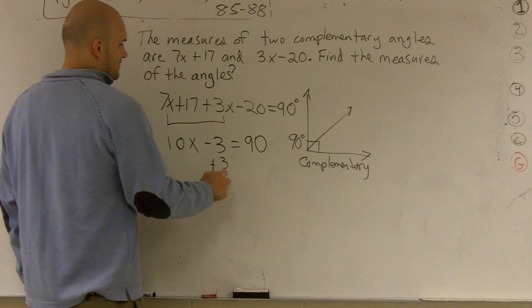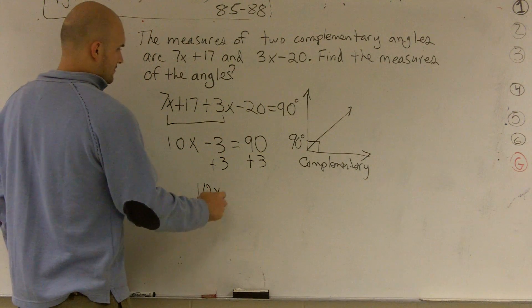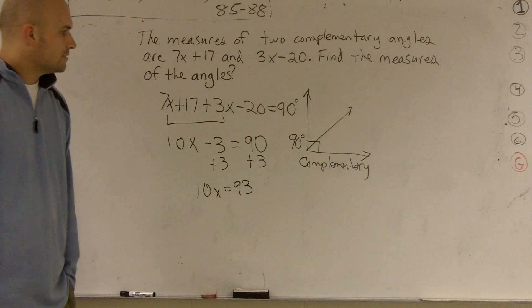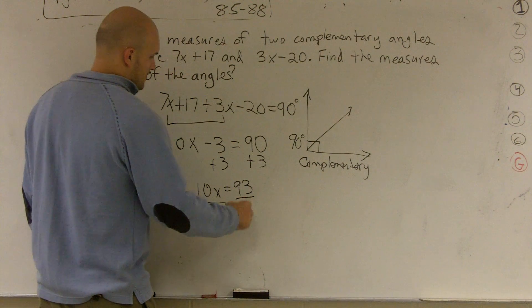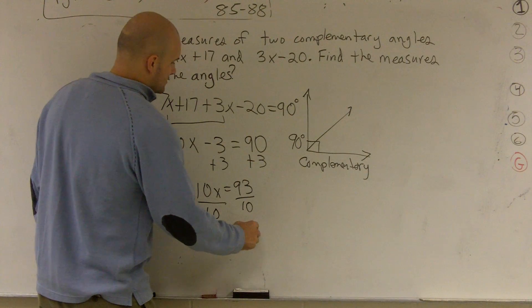So I add 3, therefore I get 10x equals 93, 93 degrees. Divide by 10, x equals 9.3 degrees.